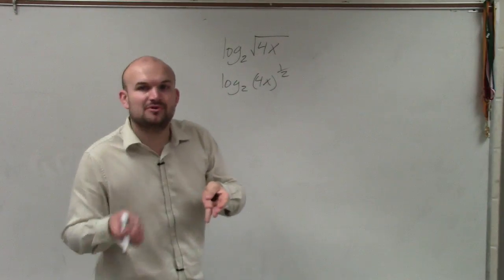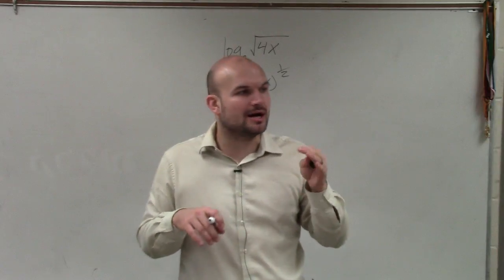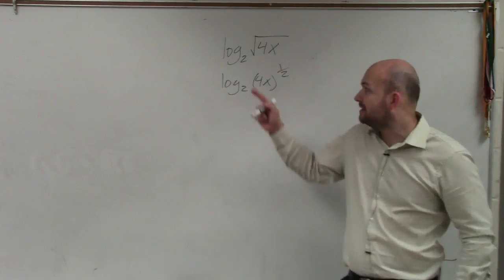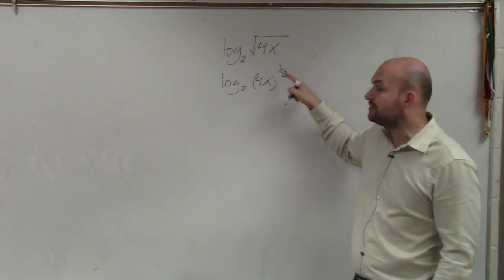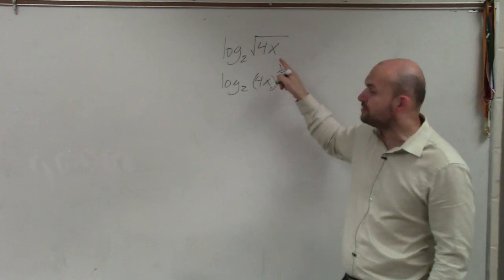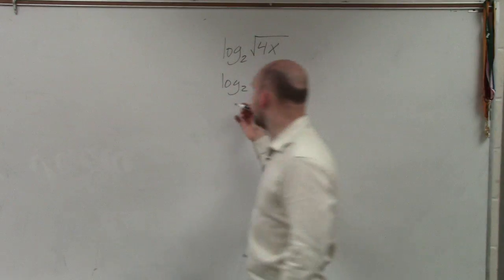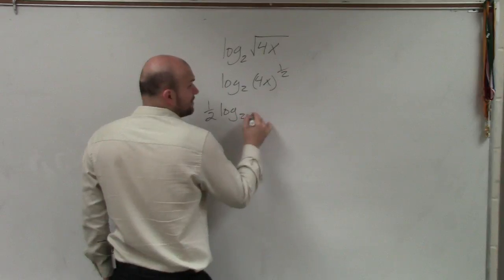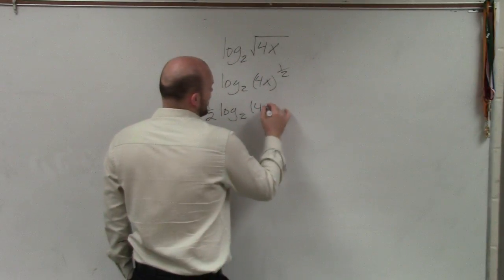So in previous examples where I'd use the power rule and then use the product rule and then use the power rule, in this example, what I'm going to want to do is rewrite my 1 half. I'm going to put my power rule down in front. So I'm going to say 1 half times log base 2 of 4x.